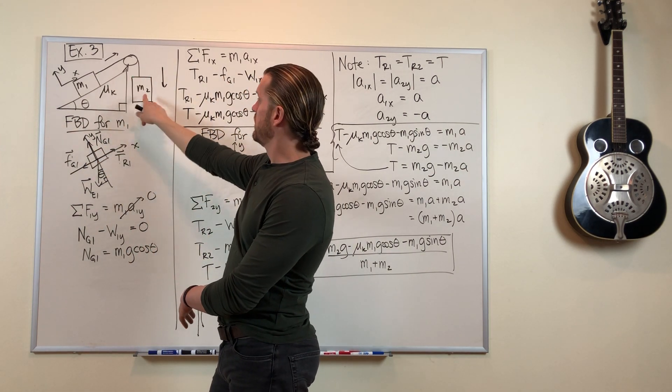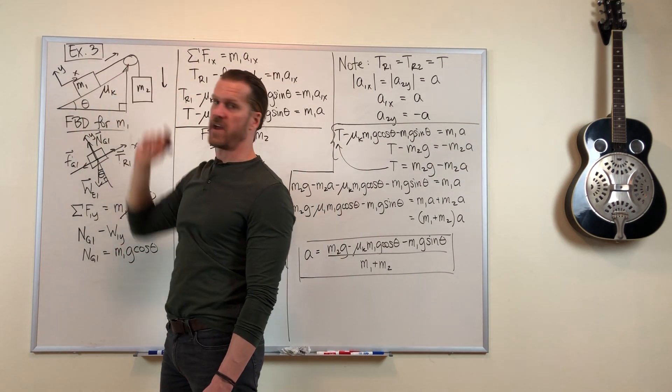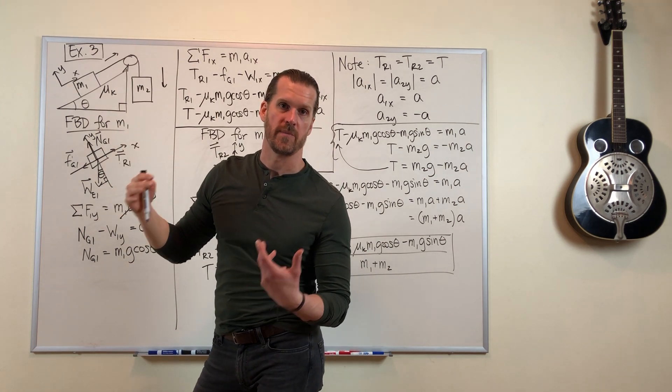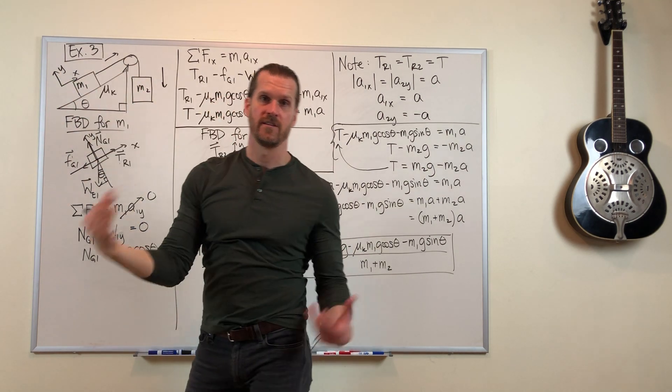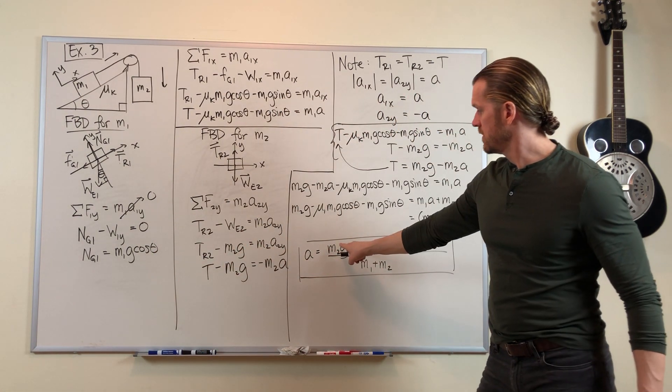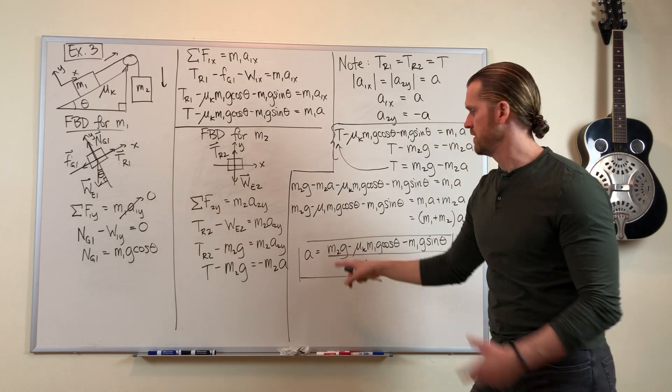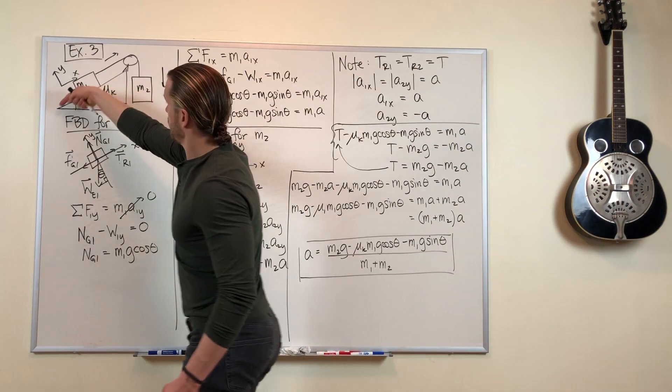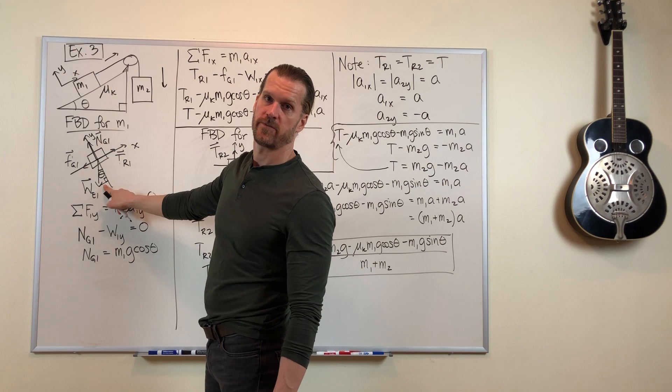But we're assuming in this problem that mass 2 is sufficiently heavy that it wins. So the system goes down this way and up that way. So the gravity force pulling on mass 2 is what makes everything go. It's what makes the system speed up or accelerate. And this other gravity force trying to pull mass 1 down the hill is fighting against it. So in this equation, we have positive m2g, which is saying that's the gravity force that's making everything speed up. It's positive. And we have this negative m1g sin theta because that's this gravity force component pulling m1 down the hill in the opposite direction. It's this little bit right here in the free body diagram.